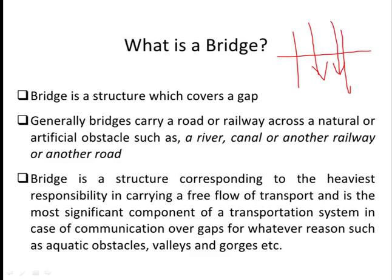Generally, bridges carry a road or a railway across a natural or artificial obstacle. A bridge is a structure corresponding to the heaviest responsibility in carrying a free flow of transportation. It is the most significant component of the transportation system in case of communication over gaps, for whatever reason such as aquatic or other obstacles. So a bridge is a very important structure for any type of natural or other obstacles when they come in the construction of highways.